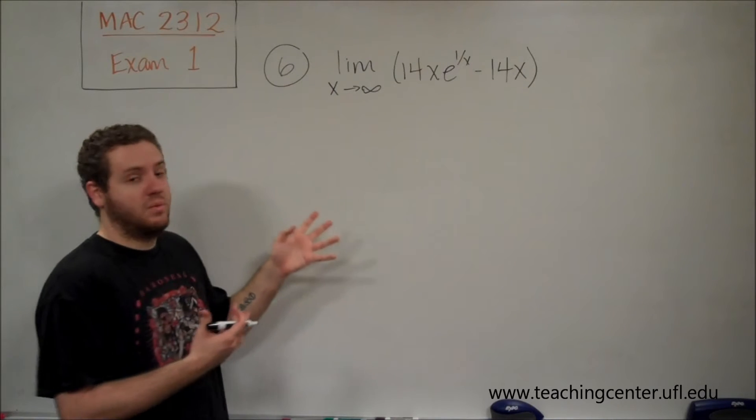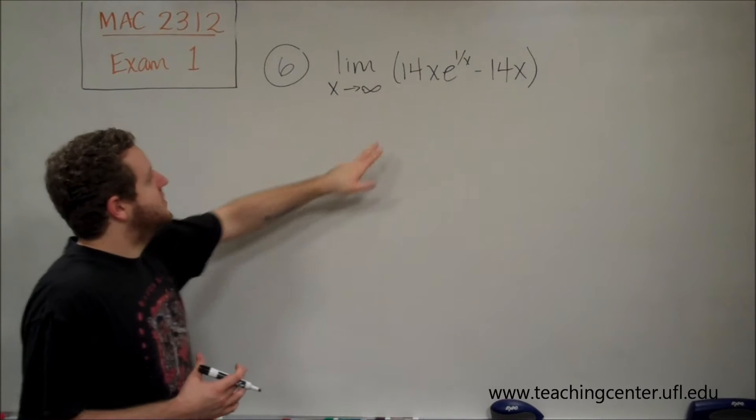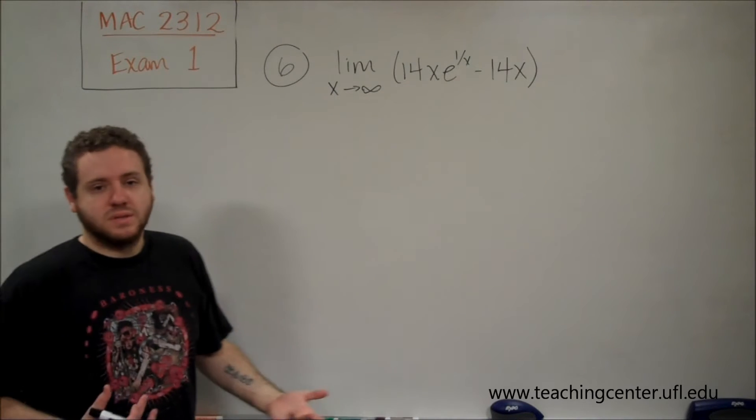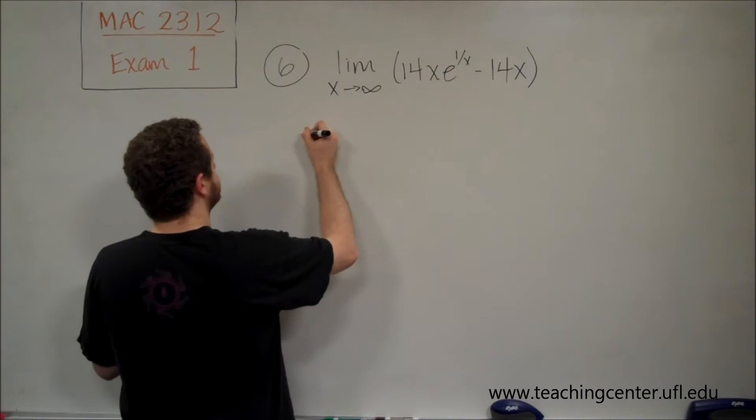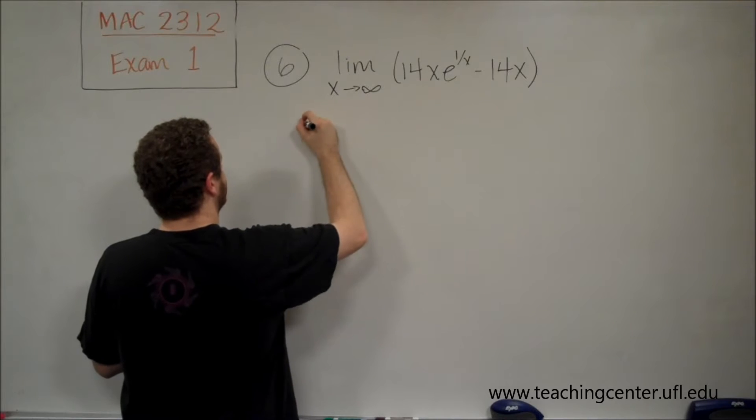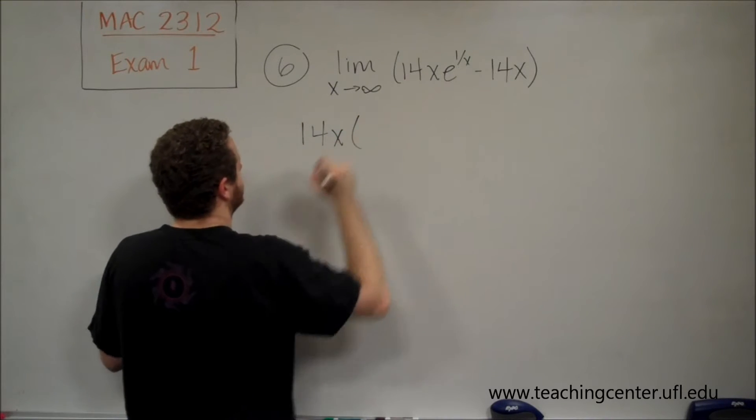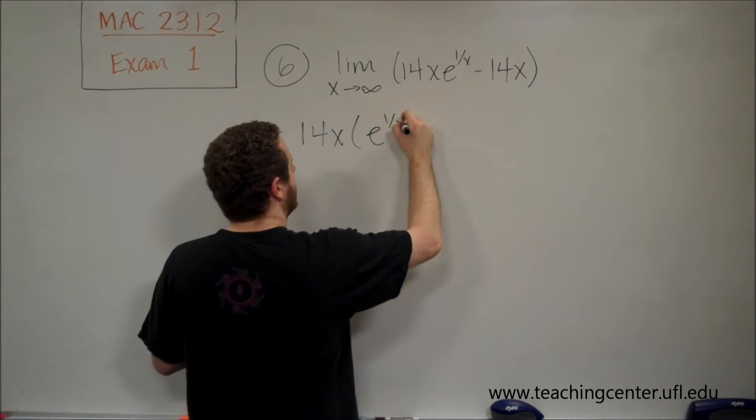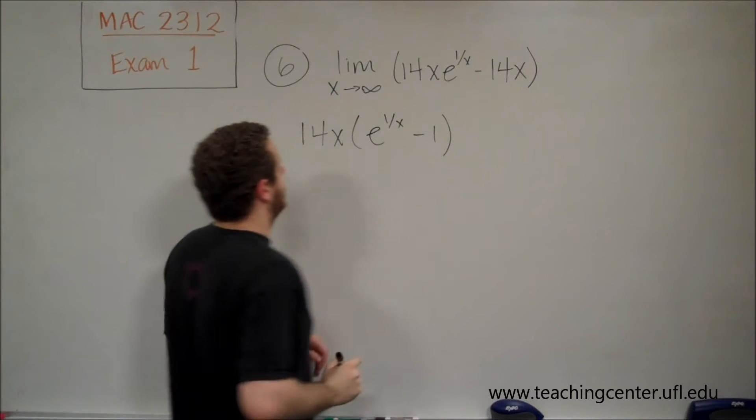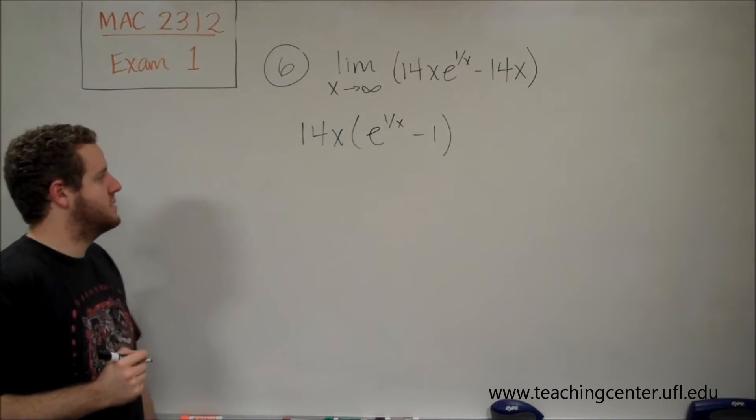It's not a fraction now, so we need to get it that way. If you notice, there's 14x in both terms, so let's factor that out. If we factor out 14x, we're left with e^(1/x) - 1.